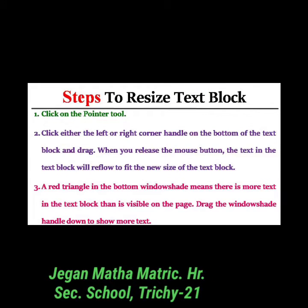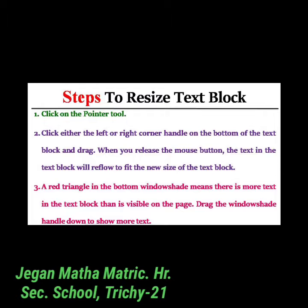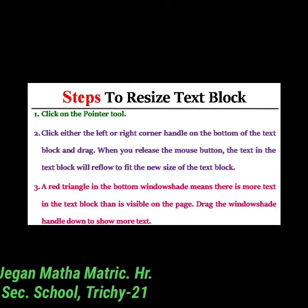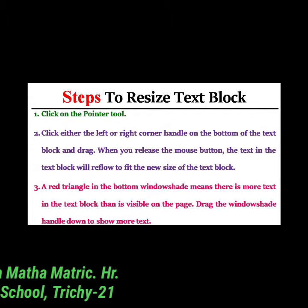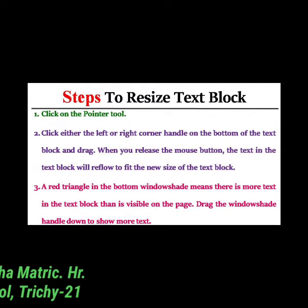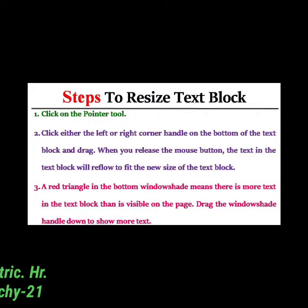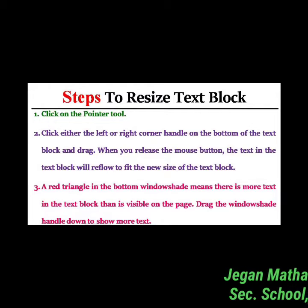Steps to resize a text block: first, click on the pointer tool. Then click either the left or right corner handle on the bottom of the text block and drag. When you release the mouse button, the text will reflow to fit the new size. A red triangle in the bottom window shade means there is more text than is visible on the page — drag the window shade handle down to show more text.